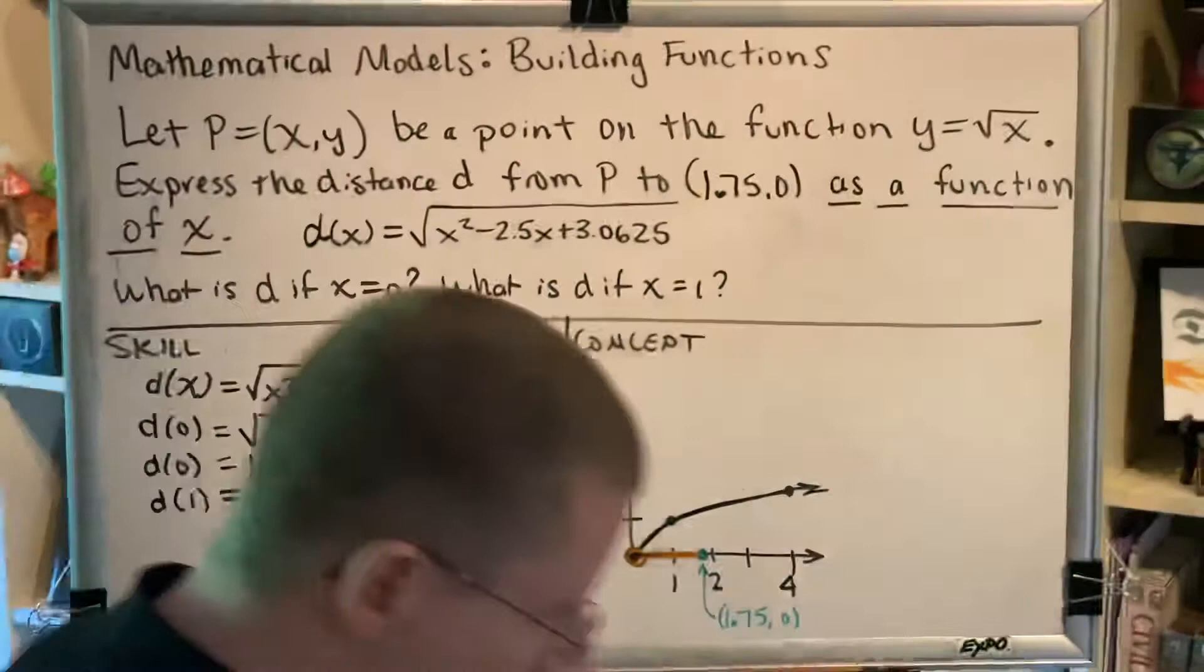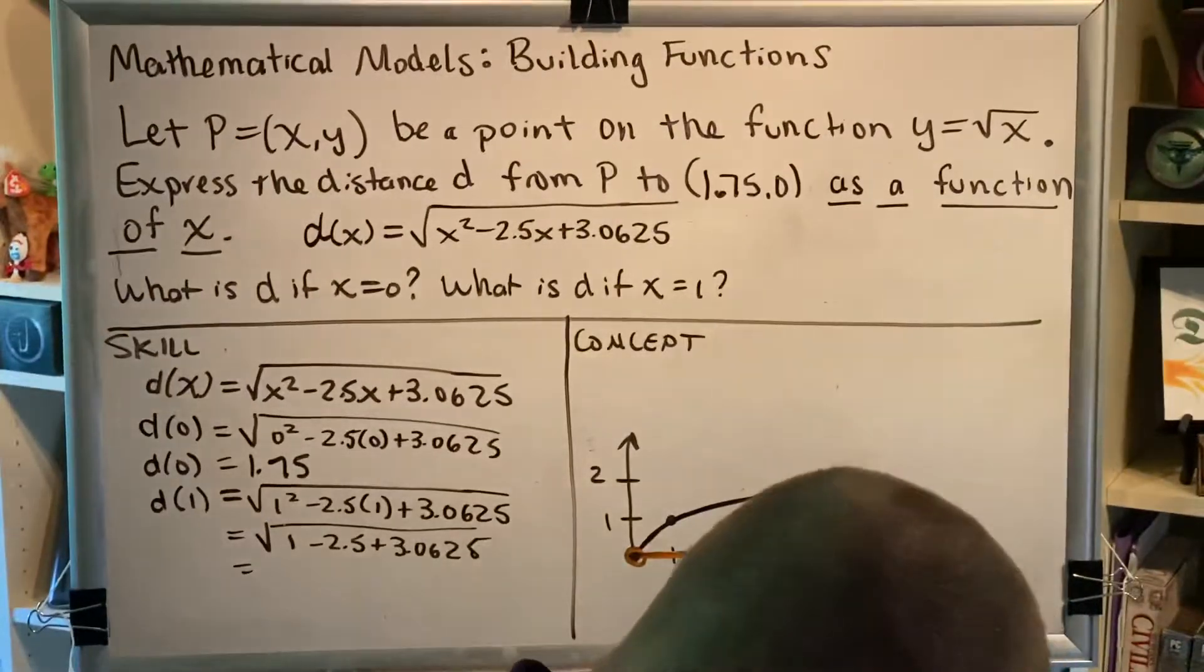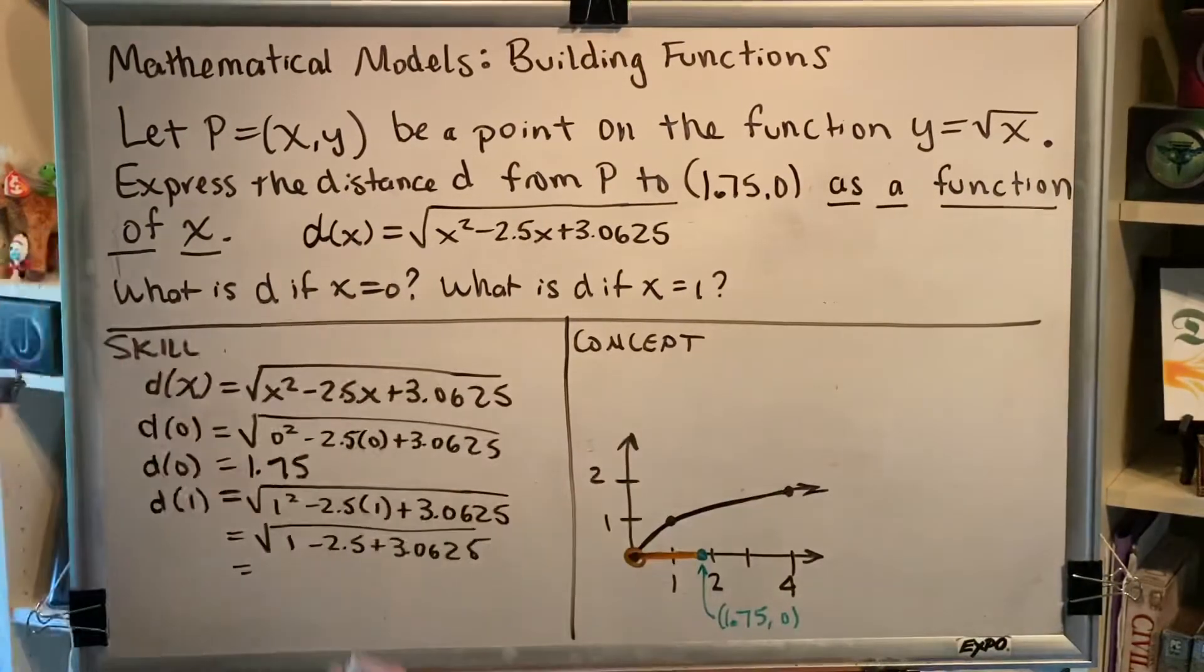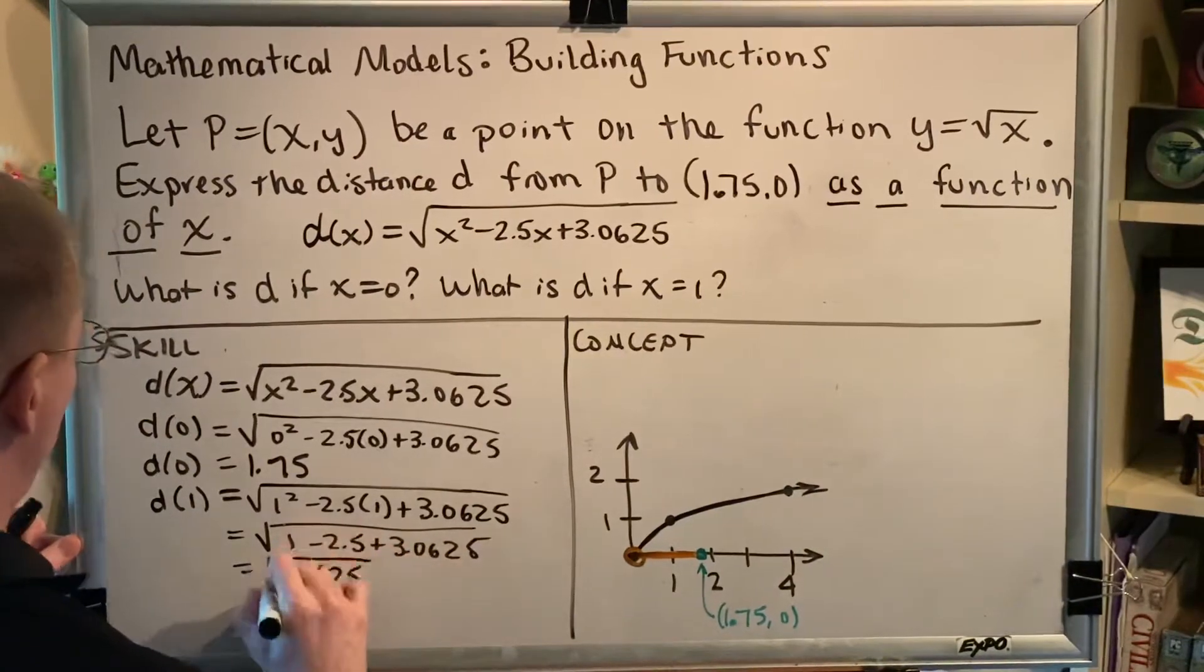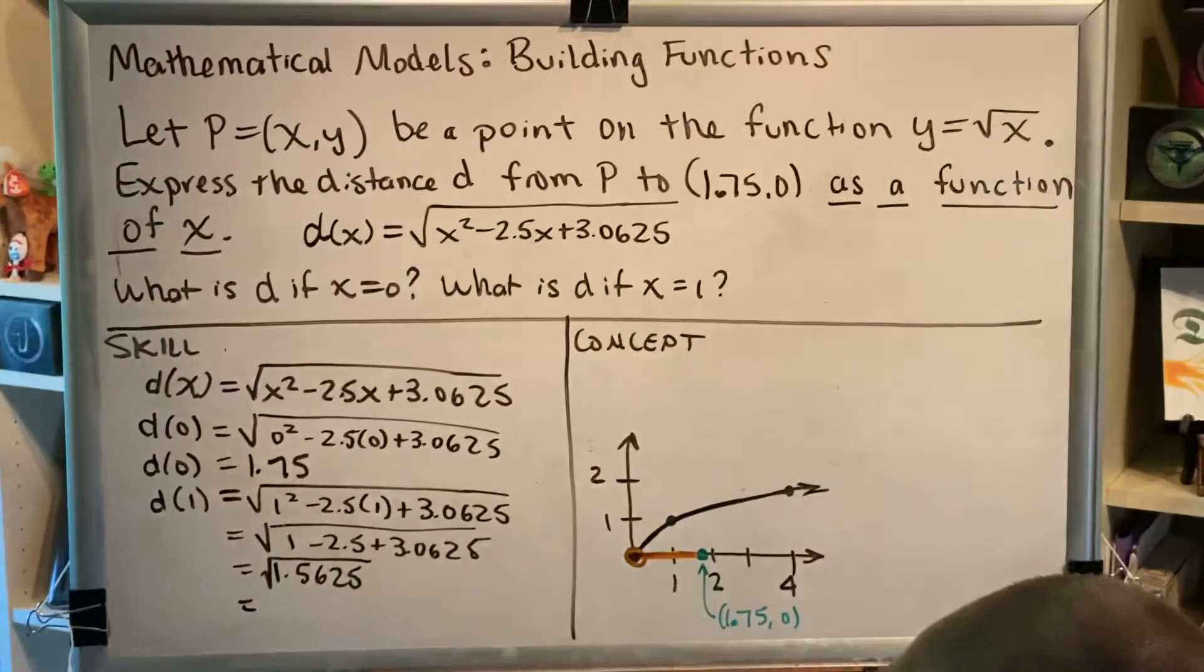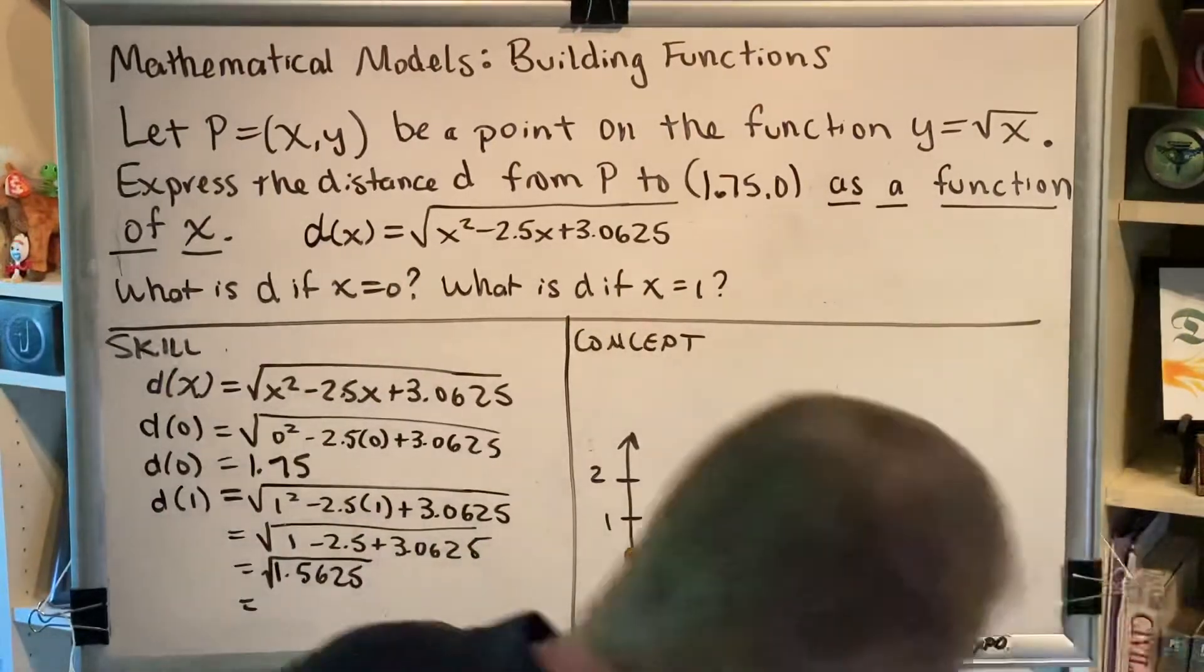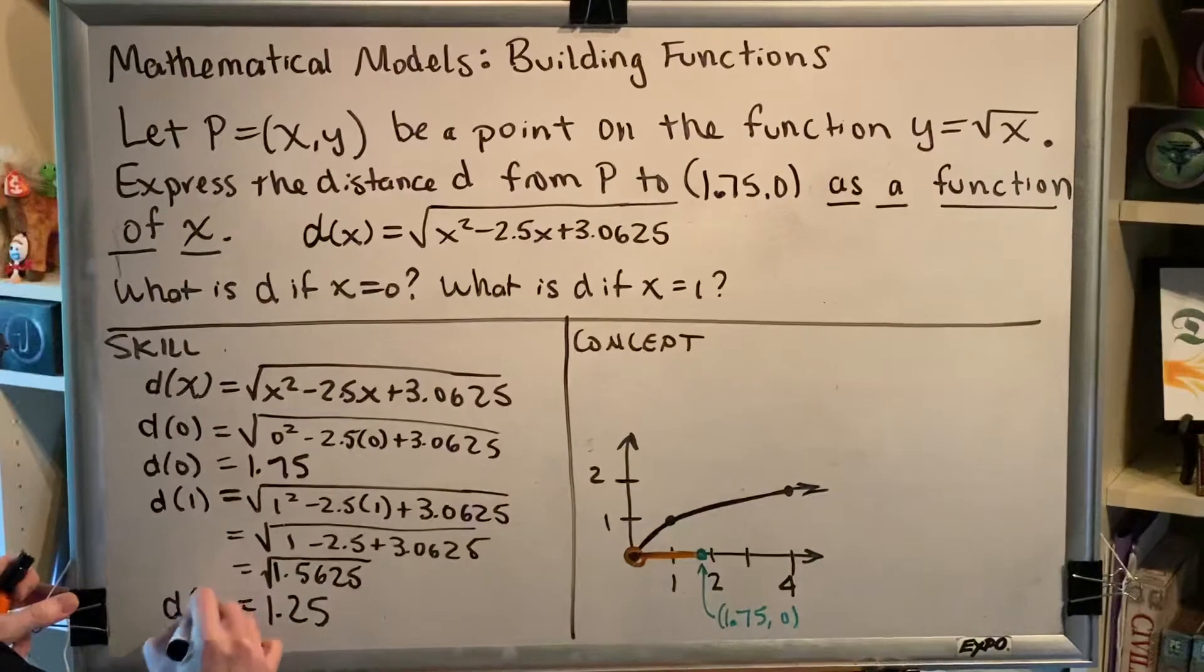Alright, so calculator time. 1 minus 2.5 plus 3.0625 is 1.5625. And then we have to take the square root of that, and the square root of 1.5625 is 1.25. That's d(1).